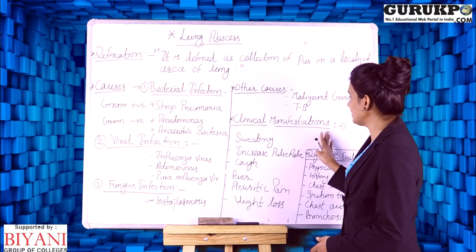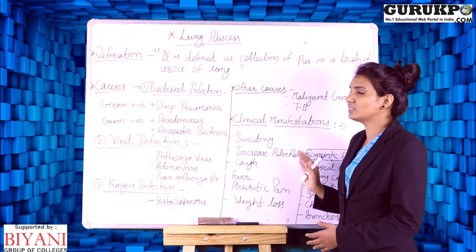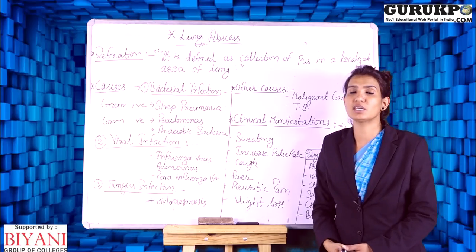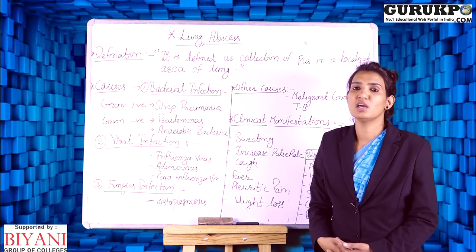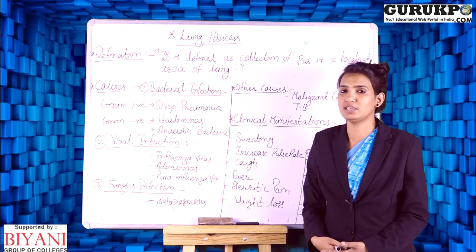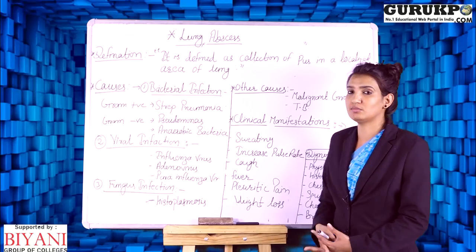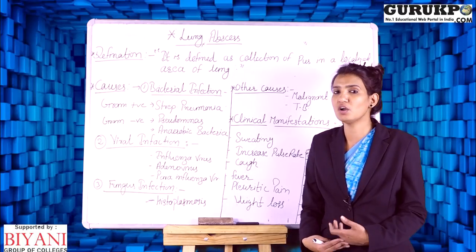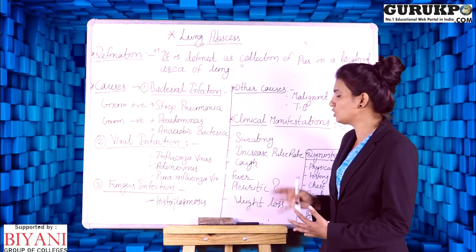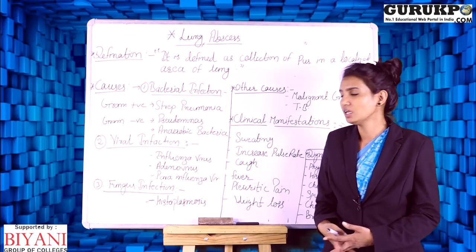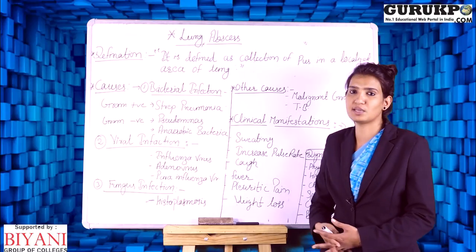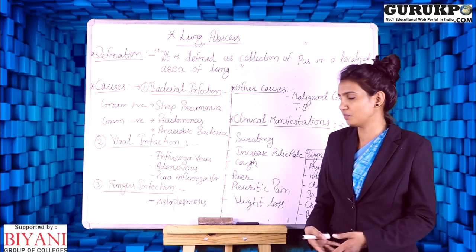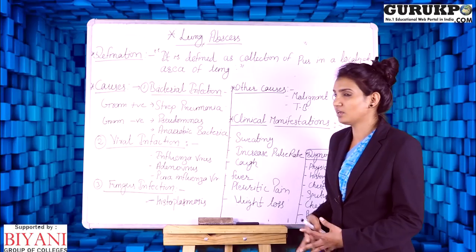Next are the clinical manifestations or signs and symptoms of lung abscess. In a patient with lung abscess, the following symptoms will appear: first symptom is sweating — meaning excessive sweating. Second is increased pulse rate — the pulse rate will exceed its normal range. Third is cough — the patient will have persistent cough. Next is fever.